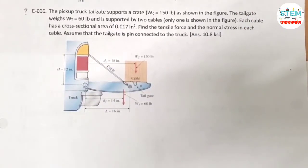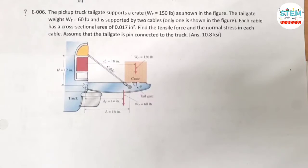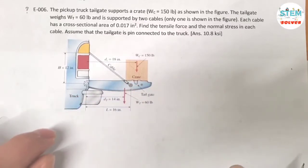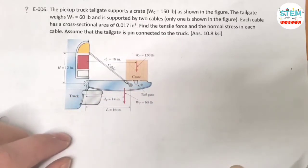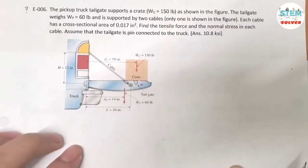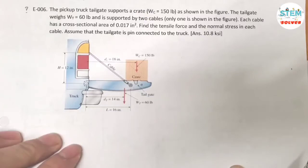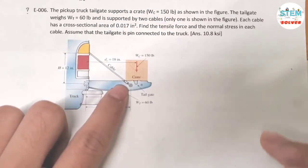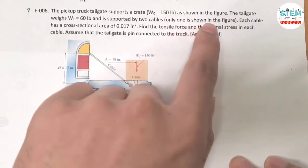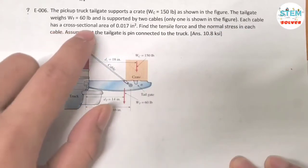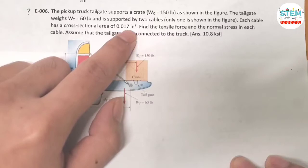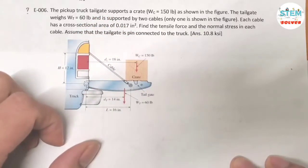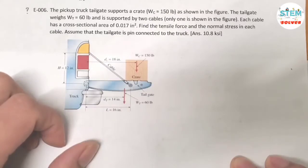The pickup truck tailgate supports a crate WC equals 150 pounds. The tailgate weighs TWT equals 60 pounds. It's supported by two cables — only one is shown in the figure, with another on the other side. Each cable has a cross-sectional area of 0.017 square inch. Find the tension force and normal stress in each cable, and assume that the tailgate is pin-connected to the truck.